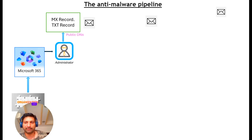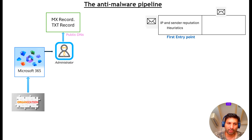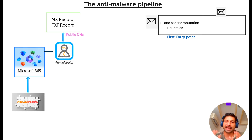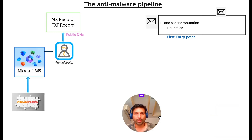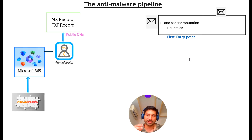The SPF record is a special type of TXT record in DNS that identifies a host as a valid sender for the organization's domain. Before EOP even comes into play, Microsoft catches a sizable amount of spam and bulk email at the first entry point in Microsoft 365, using techniques like IP and sender reputation and heuristics. Combined, these techniques identify a sizable amount of spam and bulk email.